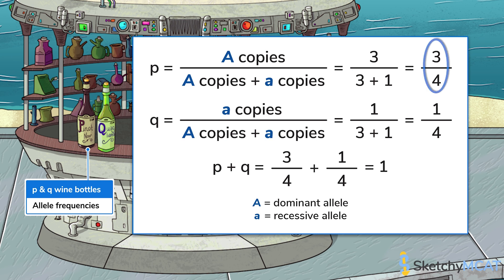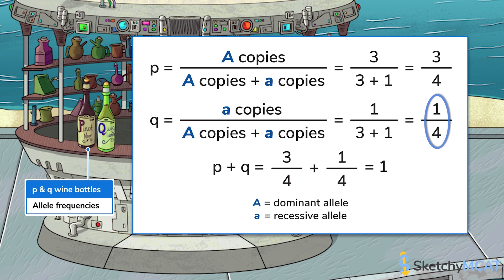This means the frequency of the dominant allele would be 3 out of 4, or 75%. Because there's only one copy of the recessive allele, its frequency would be 1 out of 4, or 25%. Of course, in most populations there are far more than two individuals, and often more than two alleles for a gene, so these calculations get a bit more complicated.